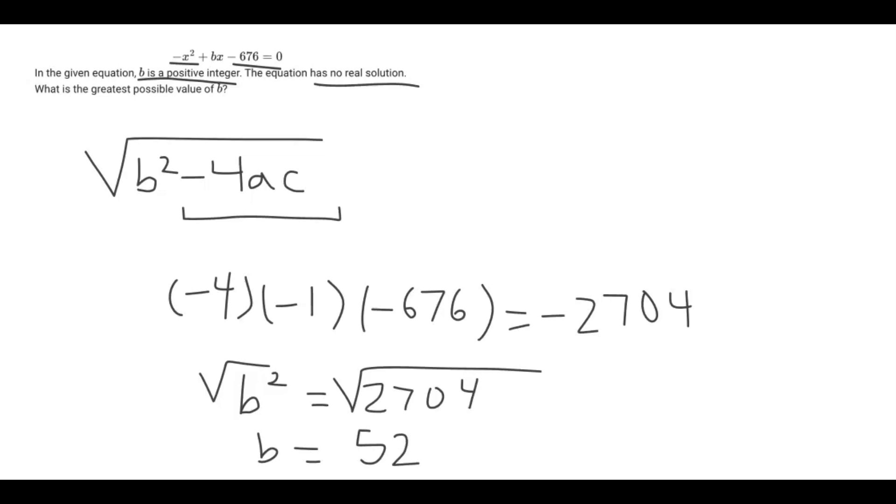52 is not our final answer, because if B is equivalent to 52, our discriminant will be equal to 0, and we would have one solution. But this equation has no real solution.